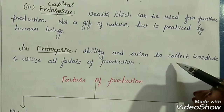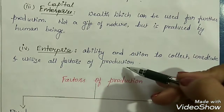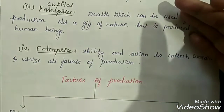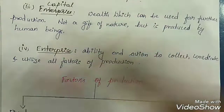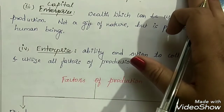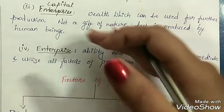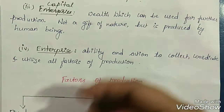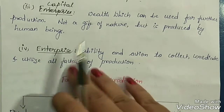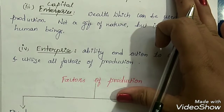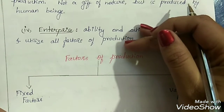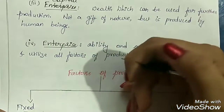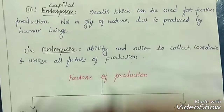Fourth is enterprise — the ability and action to collect, coordinate and utilize all factors of production. If we have land, labor and capital but no person to manage all these resources, then there has to be one person who manages, coordinates and utilizes all the factors — that person we call the entrepreneur. These four are the basic and very important factors of production.